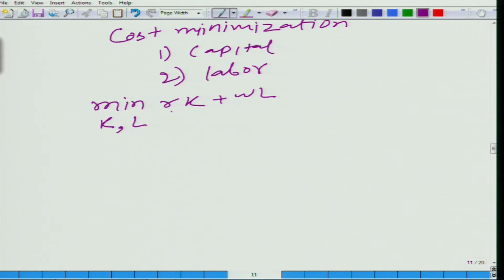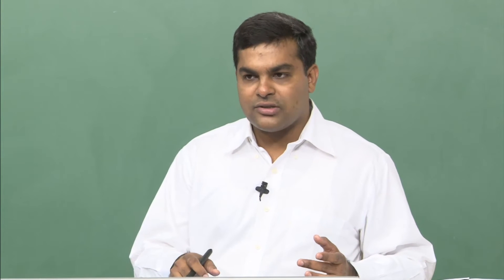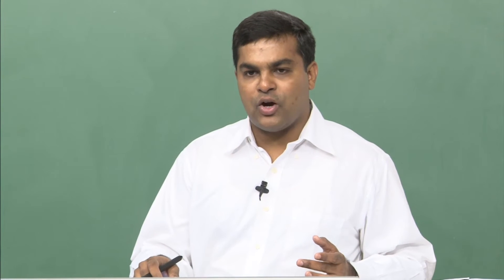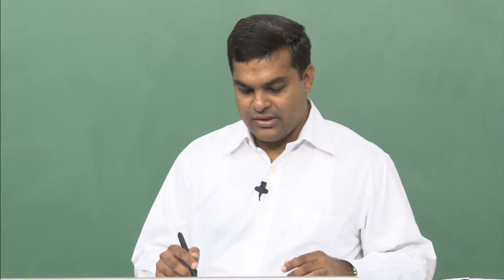What is R? R is the payment to one unit of capital, that is rent to capital, and W is the wage. What is the condition? If we do not impose a condition, we can simply say K=0, L=0 and cost will be minimized. But the idea is to produce at least Q amount of output, so the cost of producing Q amount of output is minimized.